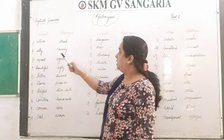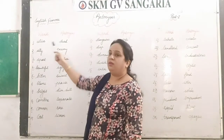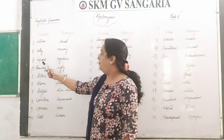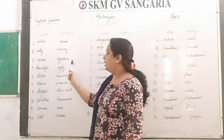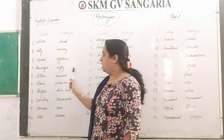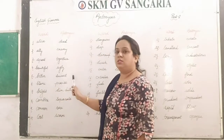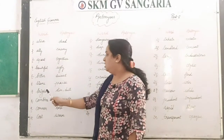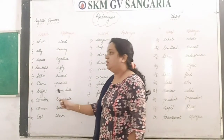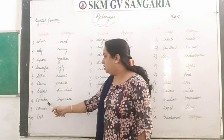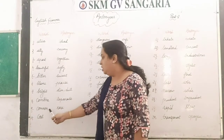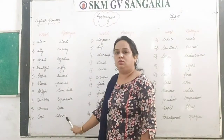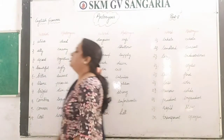Let's go through the pronunciation once again. Listen: alive — dead; ally — enemy; apart — together; beautiful — ugly; bitter — sweet; blame — praise; bright — dim or dull; combine — separate; common — rare; cool — warm.